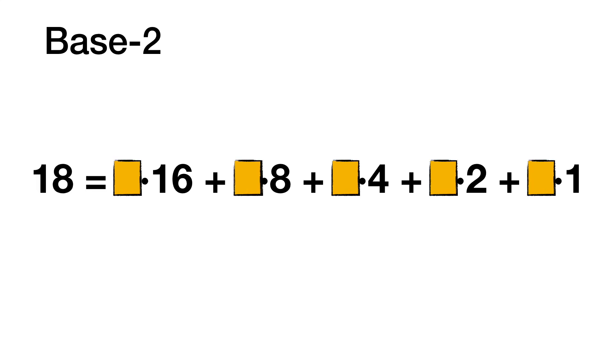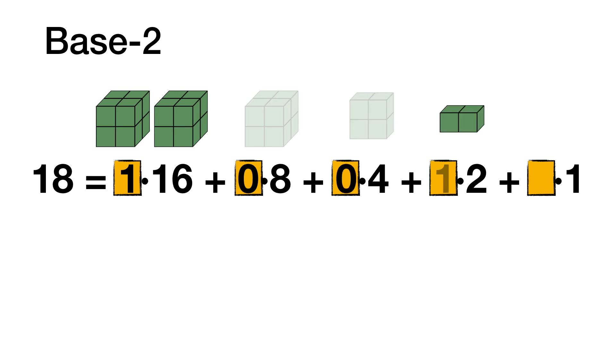Let's try another one. The number 18 can be written with 1 sixteen, 0 eights, 0 fours, 1 two, and 0 ones. In binary, the number 18 is written 10010. Notice that we only needed two digits, 0 and 1. That's true for all binary numbers.